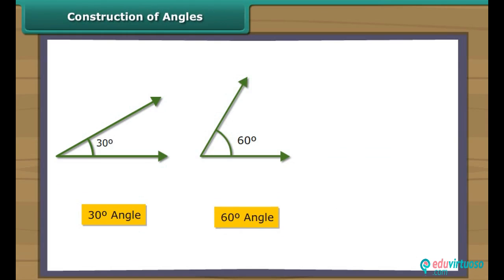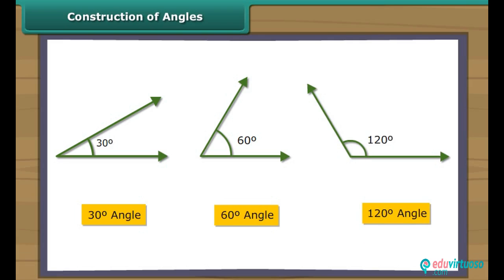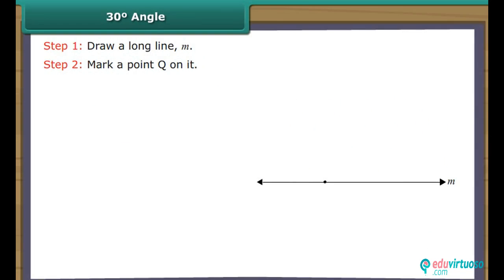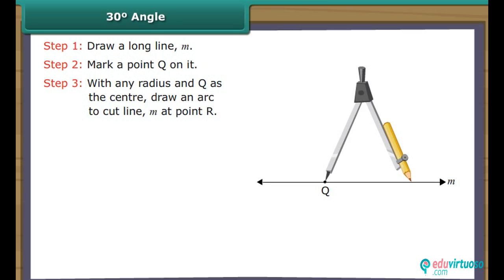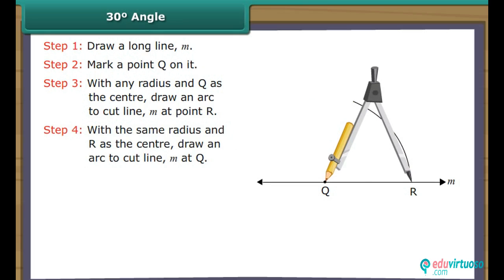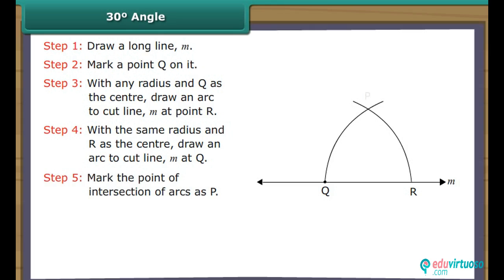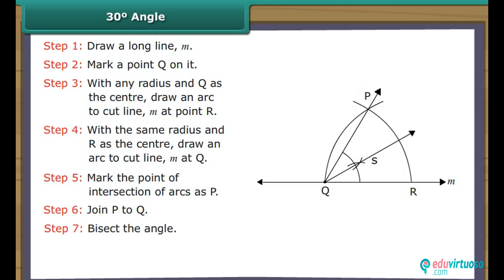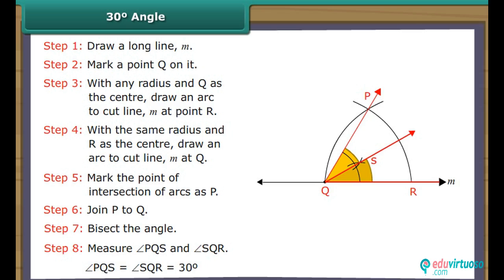Construction of angles. Let us now construct some special angles: 30 degree, 60 degree, and 120 degree angles. Construction of 30 degree angle: Draw a long line M and mark a point Q on it. With any radius and Q as the centre, draw an arc to cut line M at point R. With the same radius and R as the centre, draw an arc to cut the first arc. Mark the point of intersection as P. Join P to Q. Bisect the angle. Angle PQS equals angle SQR equals 30 degrees.